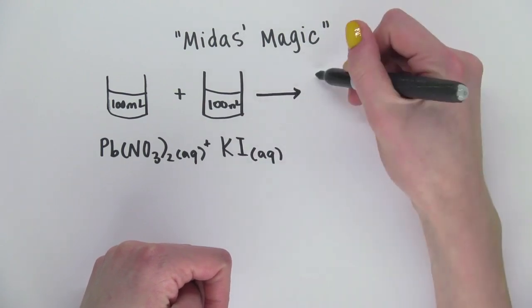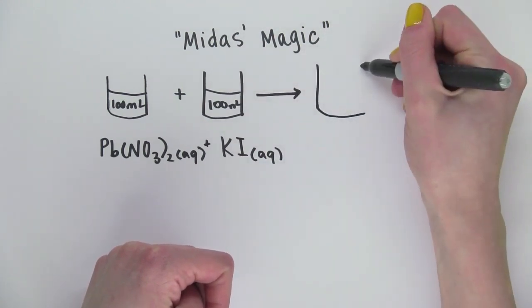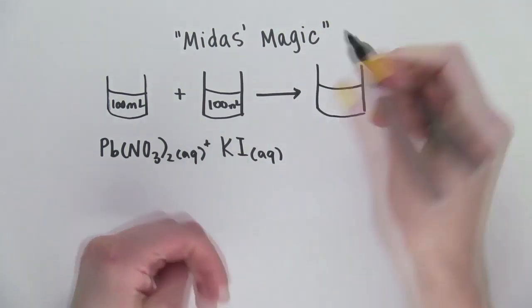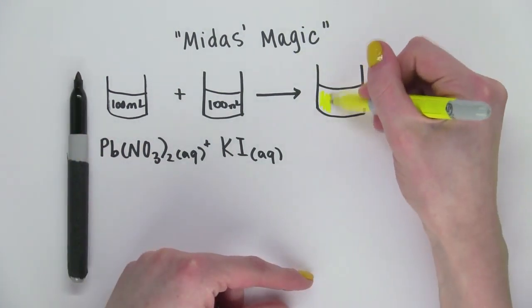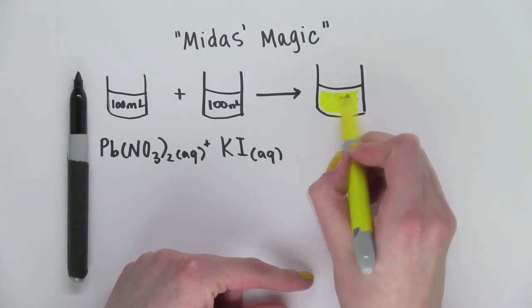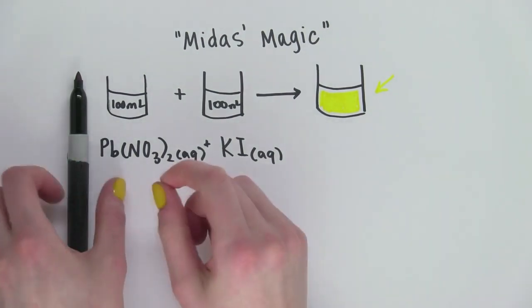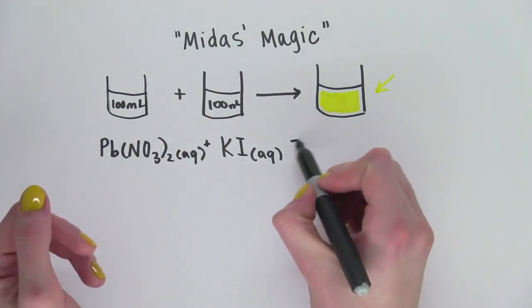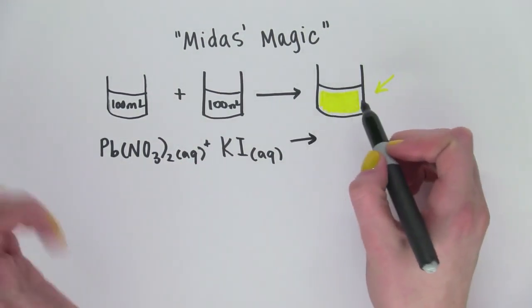And when he mixed those together, he got a yellow precipitate. Let's color that in yellow. A precipitate is a solid. So how do we know what this yellow solid is?